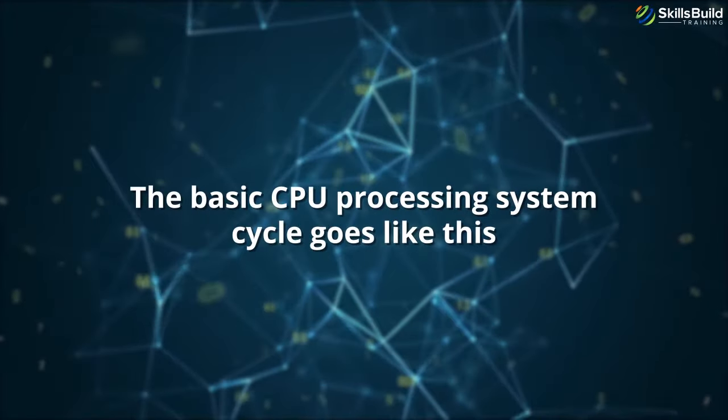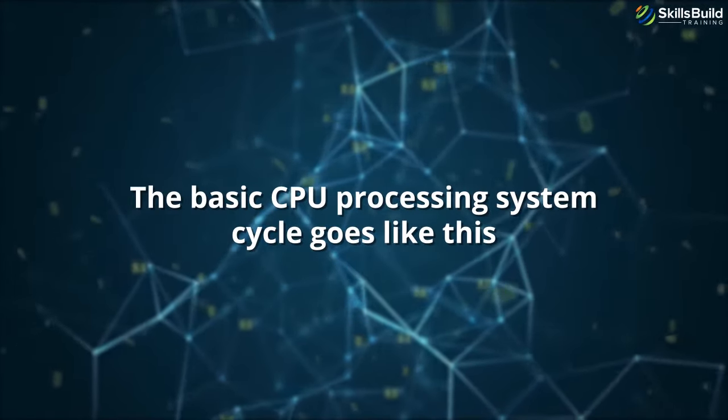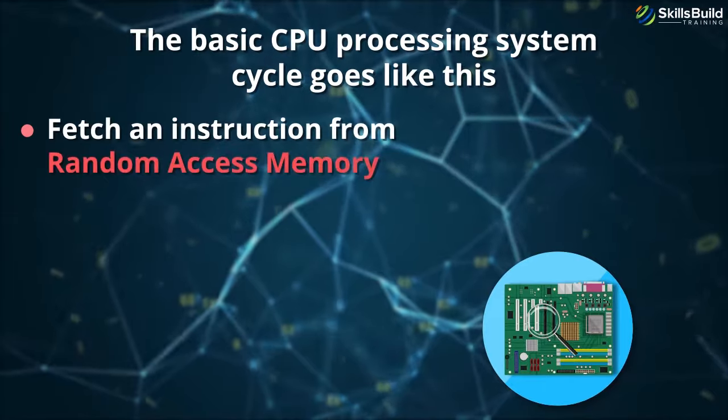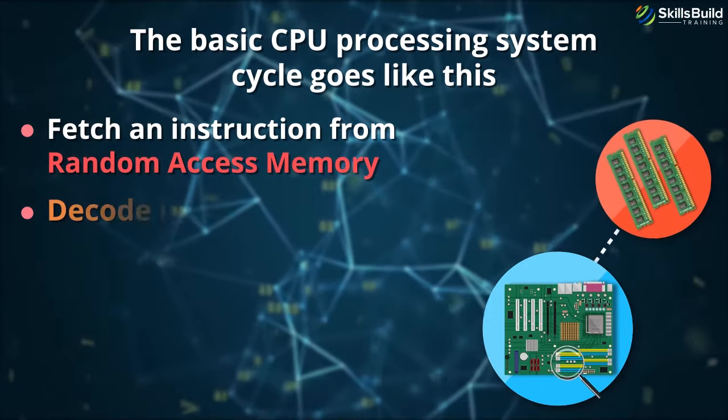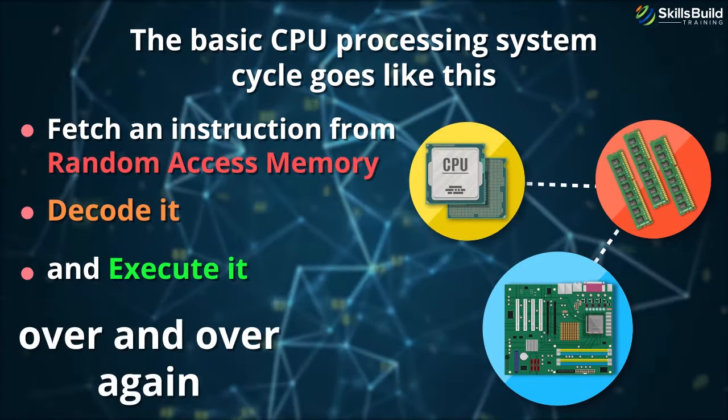The basic CPU processing system cycle goes like this: fetch an instruction from random access memory, decode it, and execute it, over and over again.